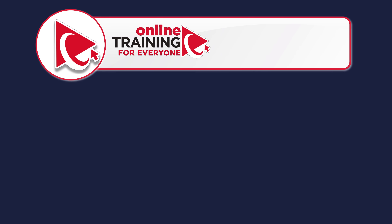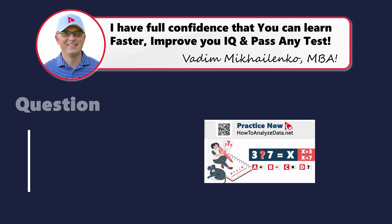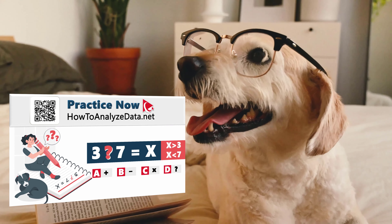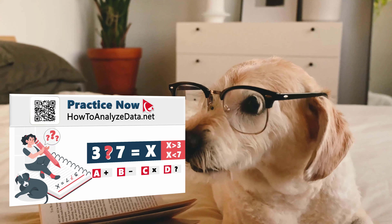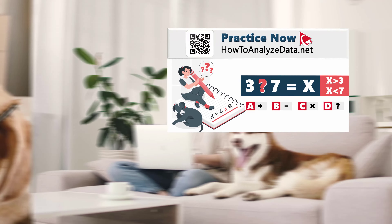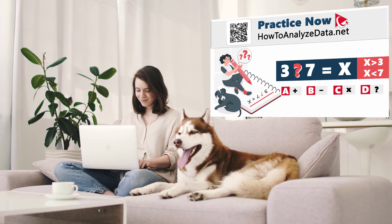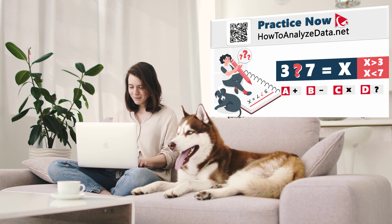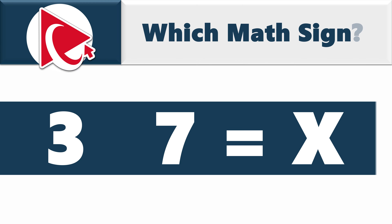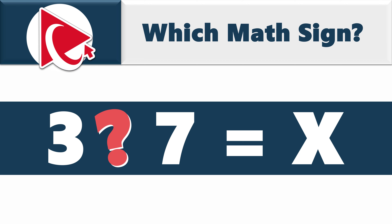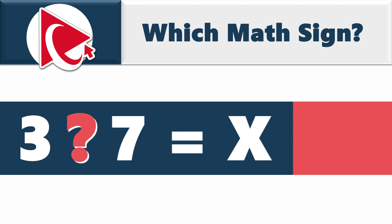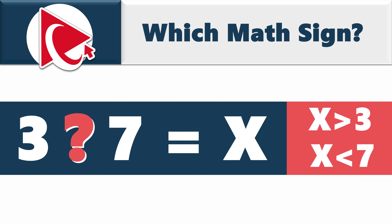You might disagree, but I have to tell you — trying to understand this question is like attempting to teach a dog advanced calculus: confusing for everyone involved. But once you coach your dog, you can definitely call the audience for help, especially with this question. Your mission is to find a special symbol to put between 3 and 7. This magical symbol should make a number that is more than 3 but less than 7.